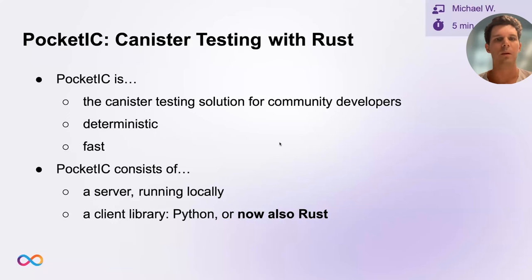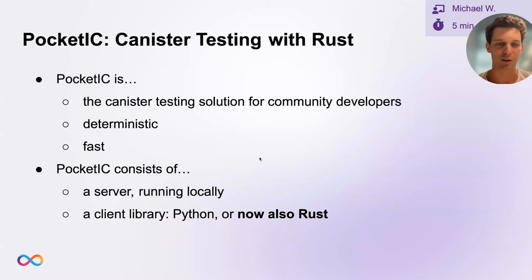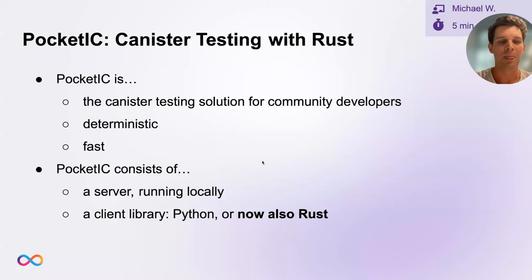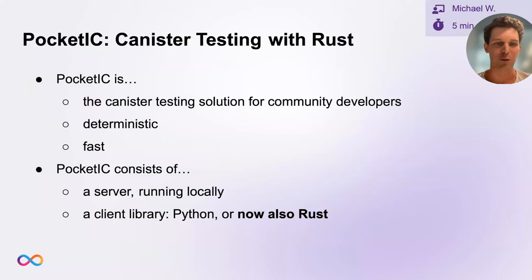Maybe your favorite language isn't supported yet — you can write your tests in some other language apart from Rust or Python. That is also possible because you can simply develop against the REST API in whatever language you want. While the team was busy polishing the Rust library, Nathan from DFINITY had already noticed that Pocket IC exists and built a small TypeScript library for Pocket IC, using it to run his own canister tests. We're grateful for Nathan's pioneering.